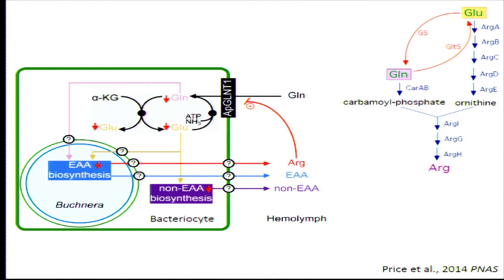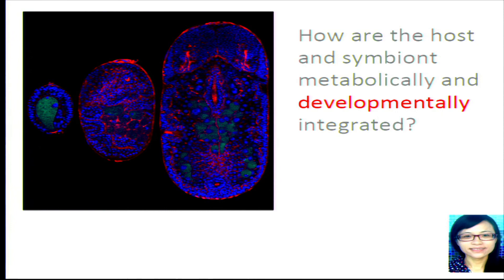Arginine in the hemolymph then shuts down glutamine transport. We published that in PNAS earlier this year. The slightly unsatisfying aspect is understanding under what conditions arginine accumulates — and that we stumbled upon recently.